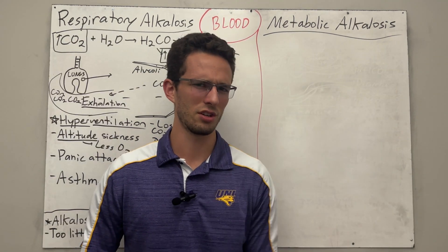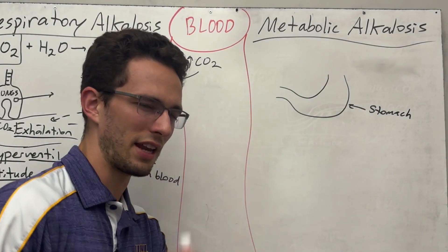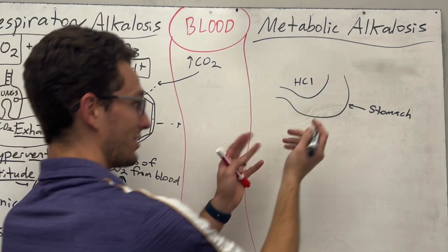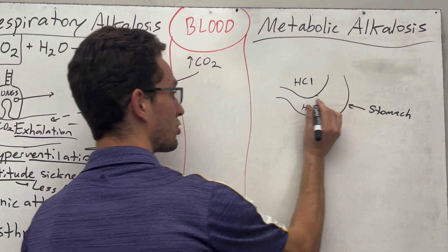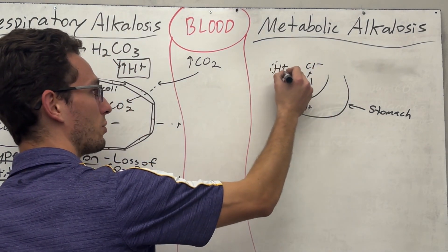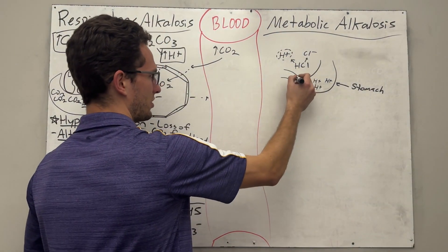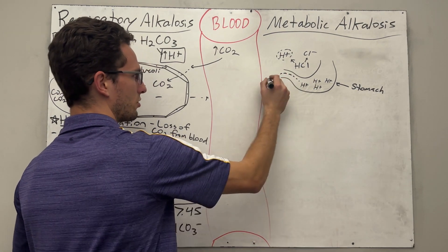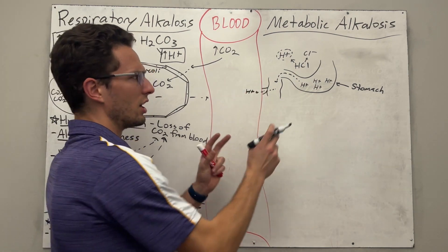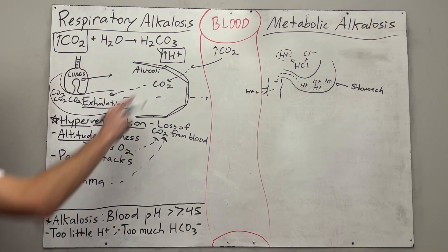But now — metabolic alkalosis. Let's go back to the stomach. In your stomach, you have a lot of hydrochloric acid, HCl, which dissociates into hydrogen ions and chlorine ions — that's an acid. If we have a lot of acid here, normally it would pass down into the intestinal tract, and those intestinal cells would reabsorb some of those hydrogen ions. But we're alkalotic, so that means we have to lose hydrogen ions.